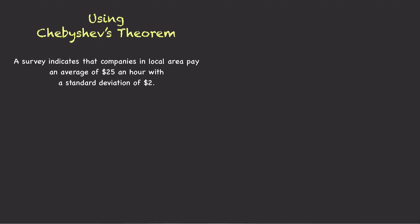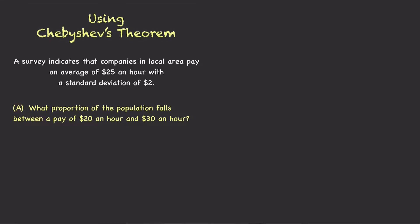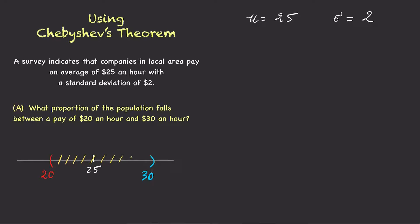A survey indicates that companies in the local area pay an average of $25 an hour with a standard deviation of $2. What proportion of the population falls between a pay of $20 an hour and $30 an hour? Note that the mean is $25 and the standard deviation is $2. We're given a lower boundary of $20 and an upper boundary of $30. Our goal is to find the proportion of the population that would fall inside this boundary.